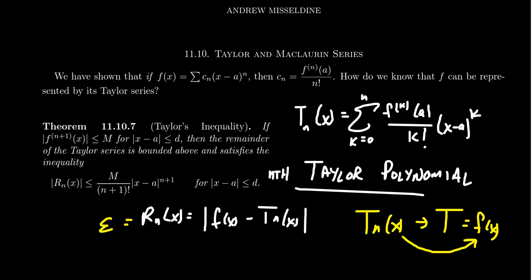And so the remainder R_n(x) measures the error between the function and the Taylor polynomials. If the Taylor polynomials converge towards the function, then this converges towards zero. That's what R_n is trying to measure. Therefore, we want to show that this goes to zero, and one can use Taylor's inequality to accomplish that.